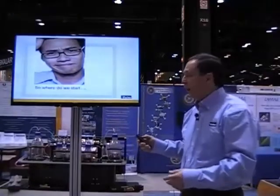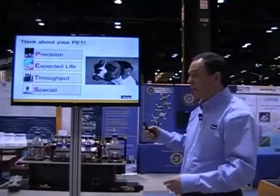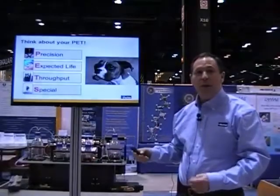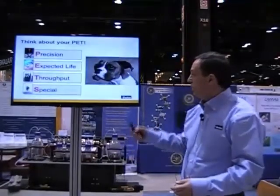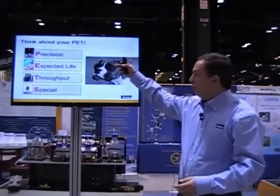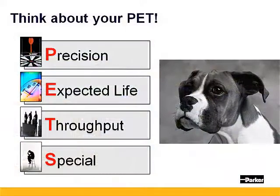So where do we start? I like to remember things through acronyms, and in this case I use the acronym PETS, which stands for the Precision of your drivetrain, the Expected life you need out of it, the Throughput you need out of it, and some Special considerations.